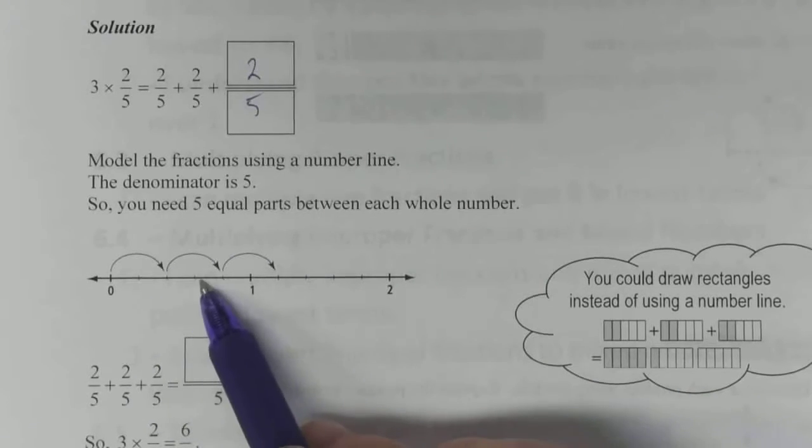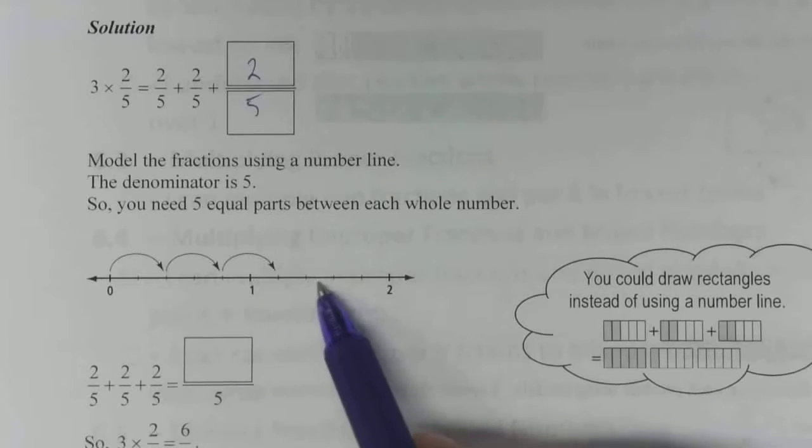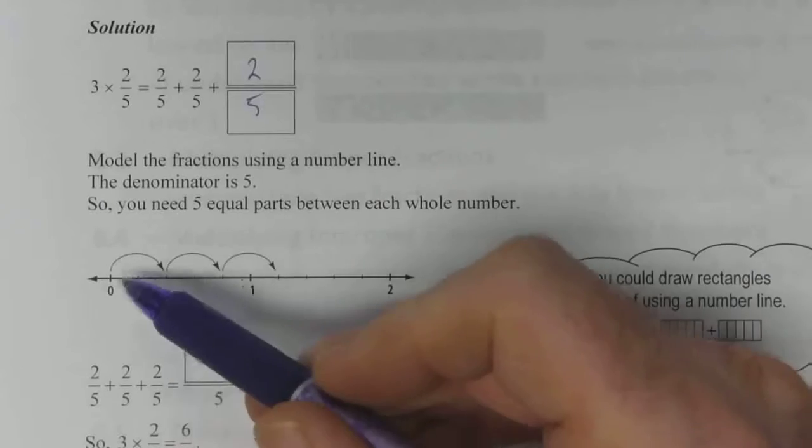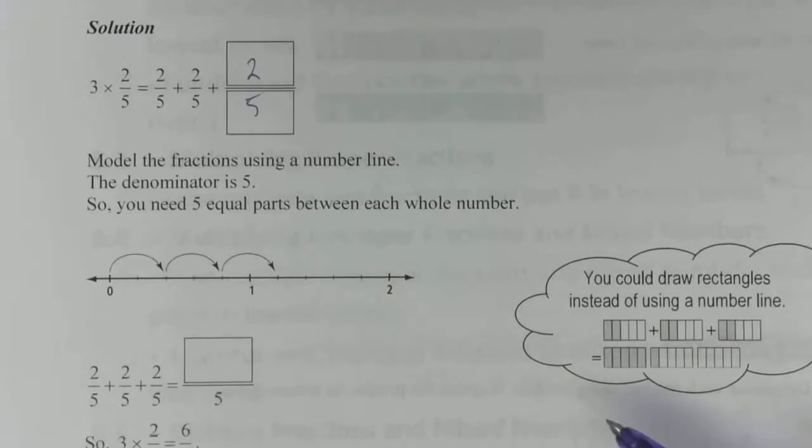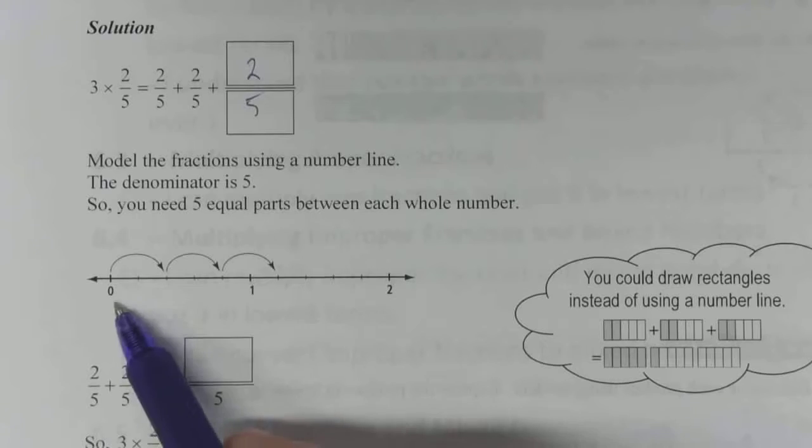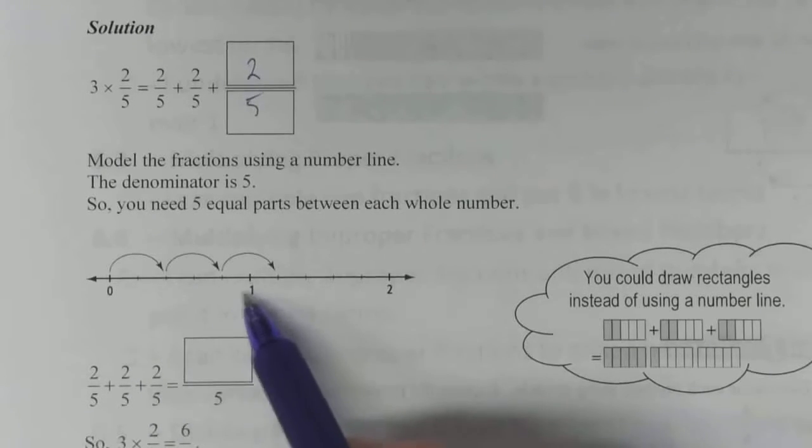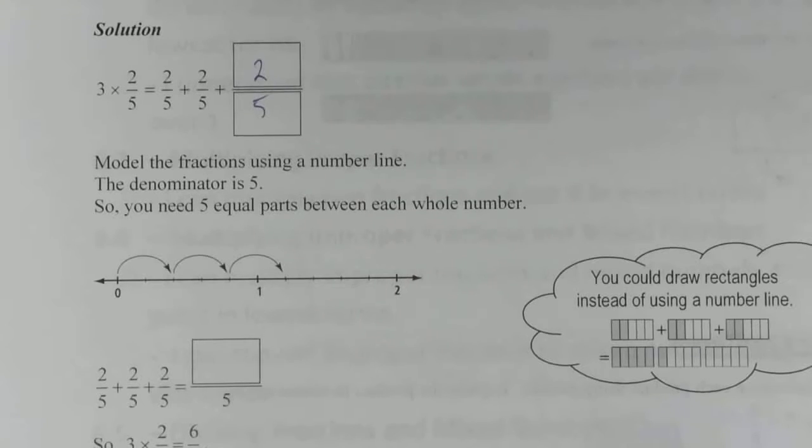So one, two, three, four, five. One, two, three, four, five sections between each number. That's not five ticks between each number. You'll notice that there's only four ticks between zero and one. But four ticks makes five sections, and it's the five sections that we're worried about.